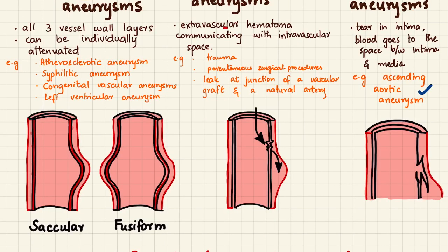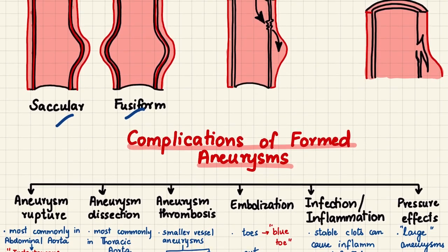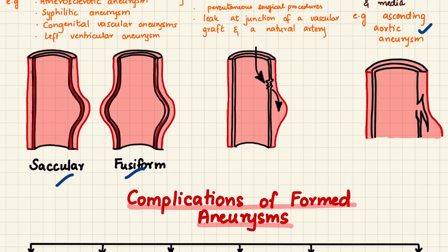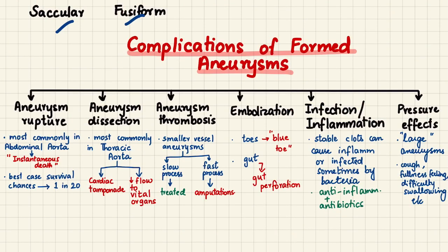Regarding shape, there are two types of true aneurysm: saccular, which is like a sac, and fusiform, which is like a spindle. Diagrams also show the false aneurysm and dissecting aneurysm appearances.